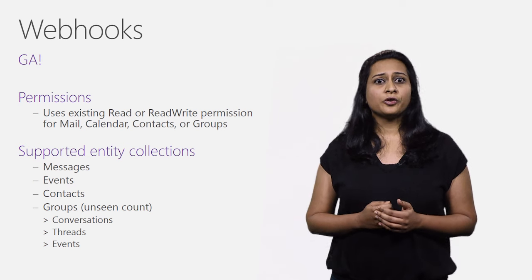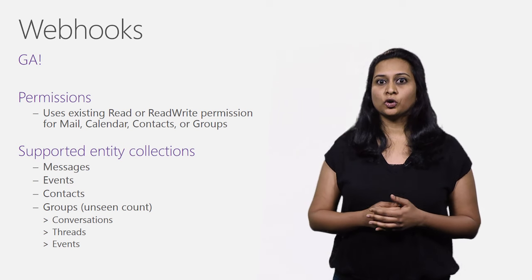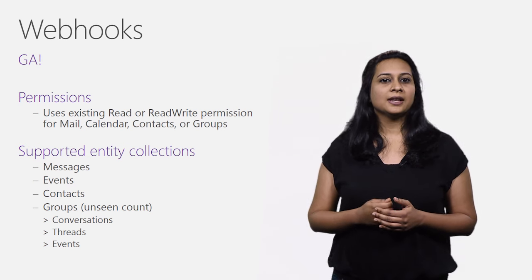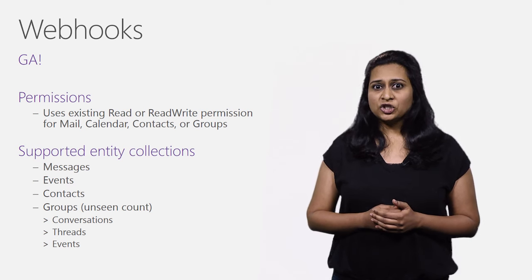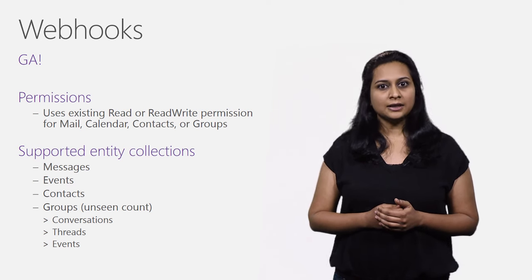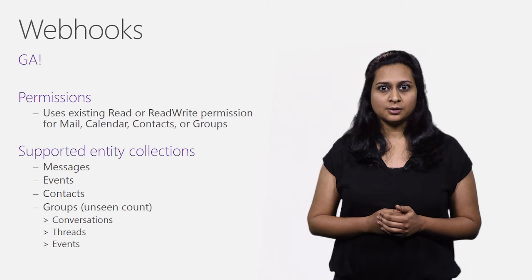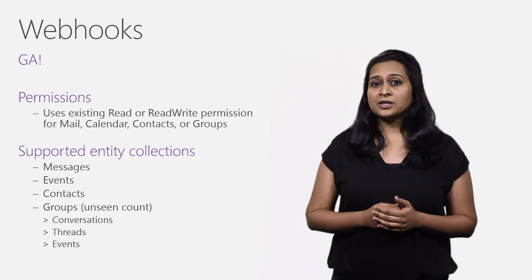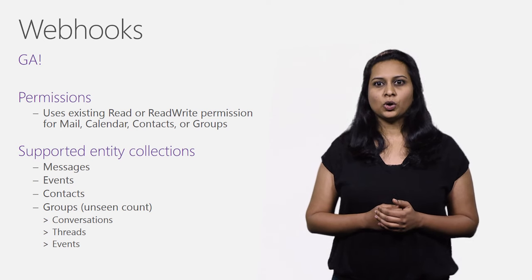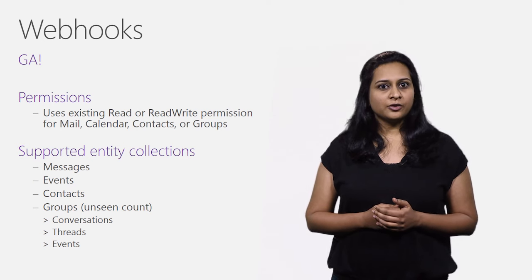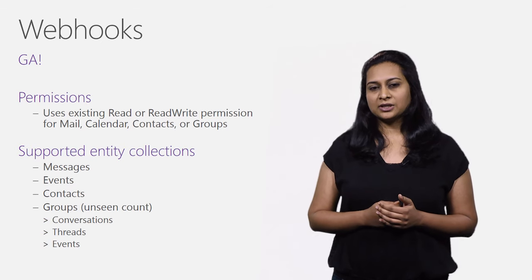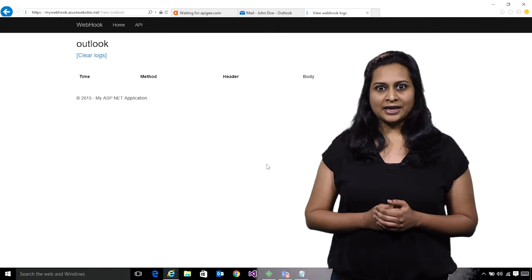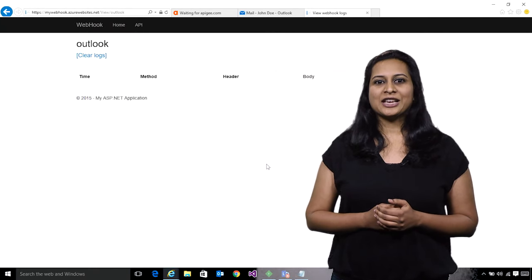Instead, the app will be notified when anything in the mailbox is updated or deleted, or if new items are added. The app needs to first subscribe to notifications at the subscriptions endpoint by specifying which changes are of interest to the app, for example, incoming emails. Each subscription is valid for 72 hours, after which the app would need to renew the subscription.